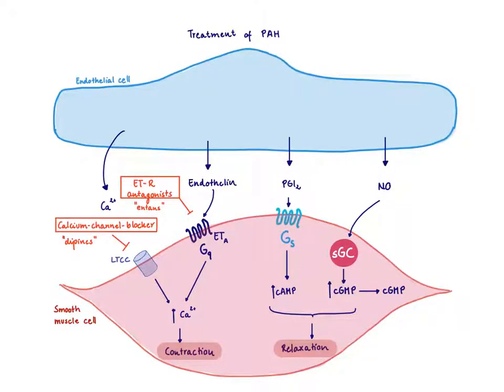To treat pulmonary arterial hypertension, we have to address this imbalance between contractile and dilatory mediators. For pulmonary arterial hypertension, there might be too many contractile mediators that increase pulmonary vascular resistance. For treatment, we can either inhibit these contractile mediators or enhance these dilatory mediators, and that's exactly what we do.